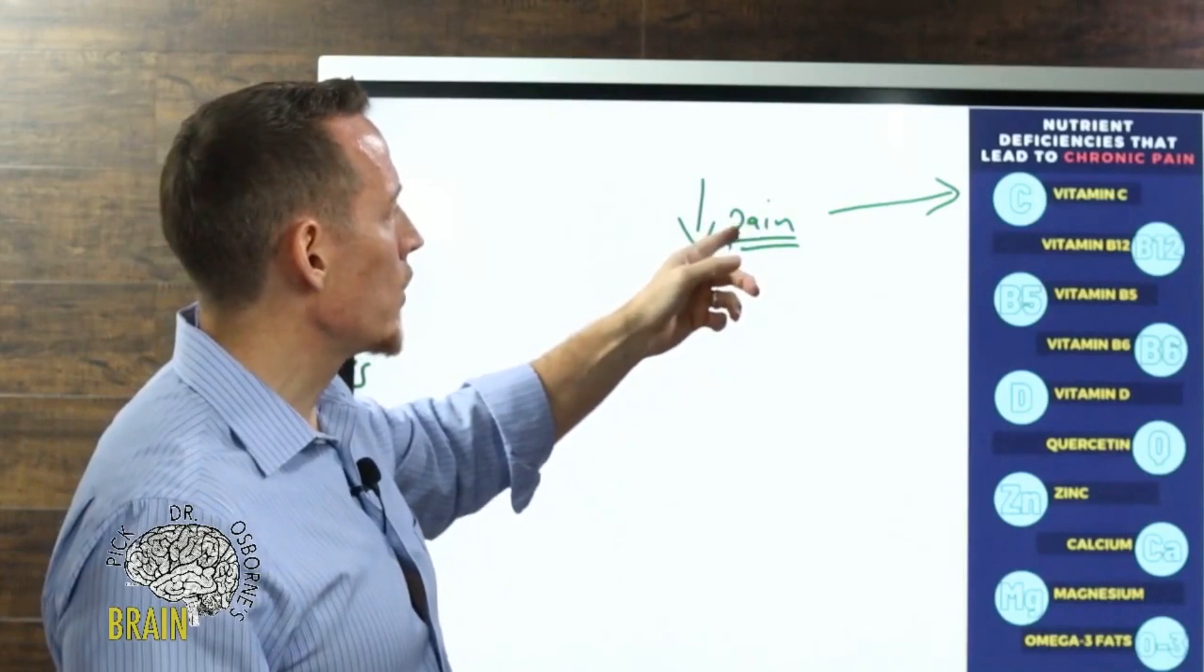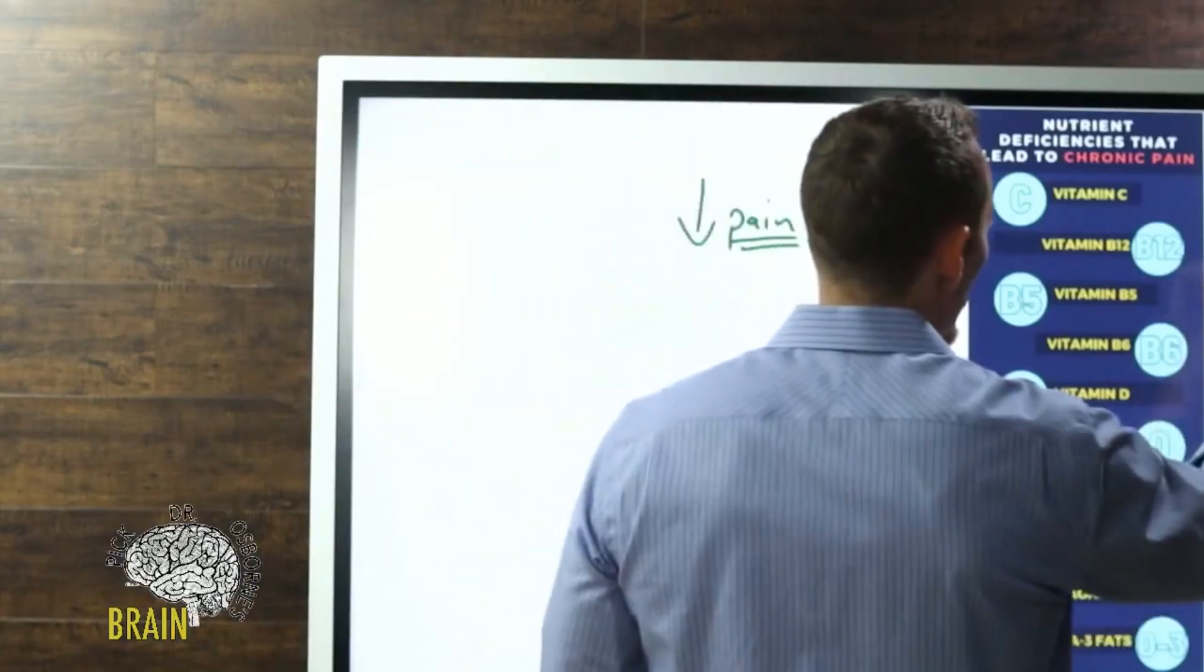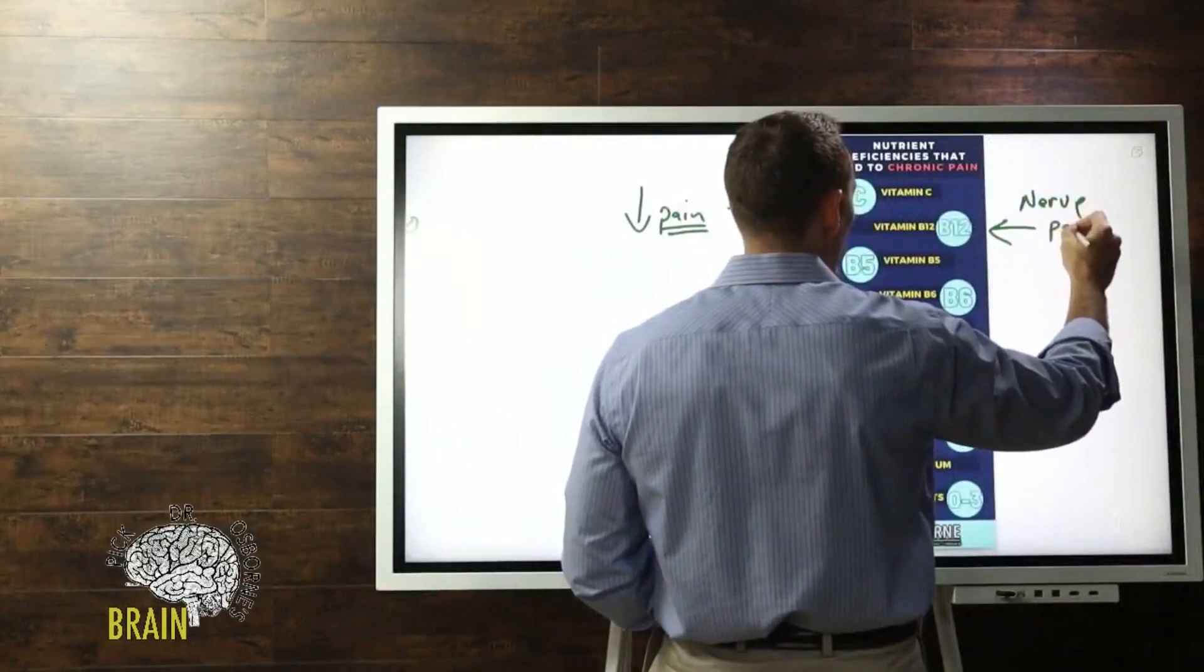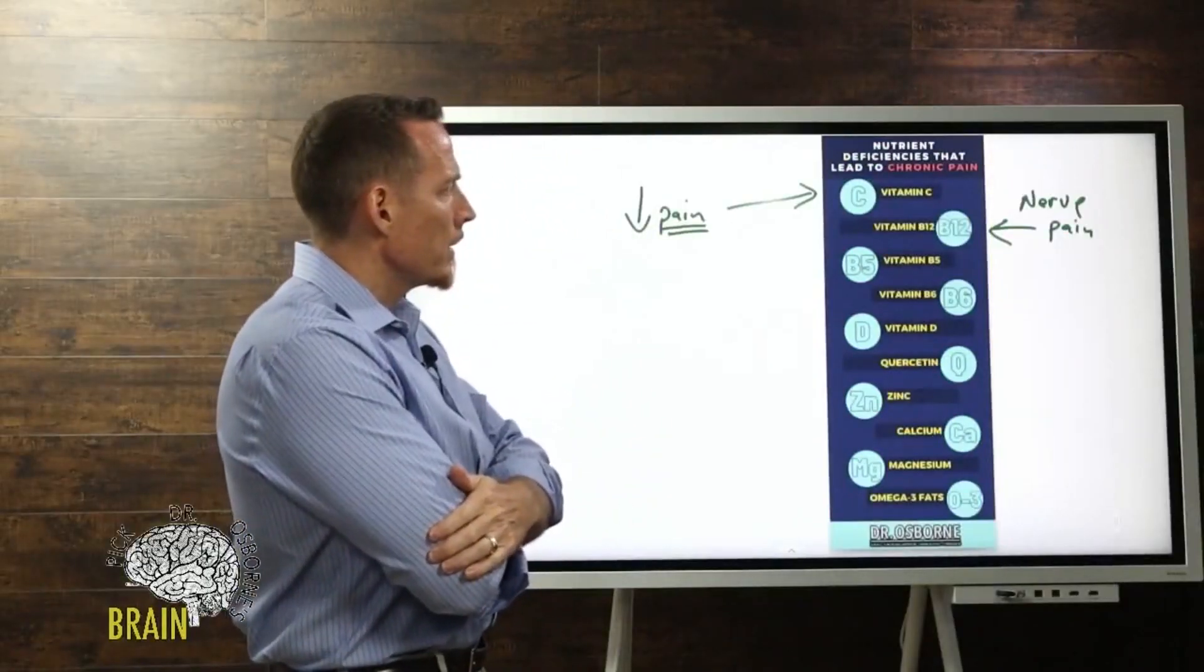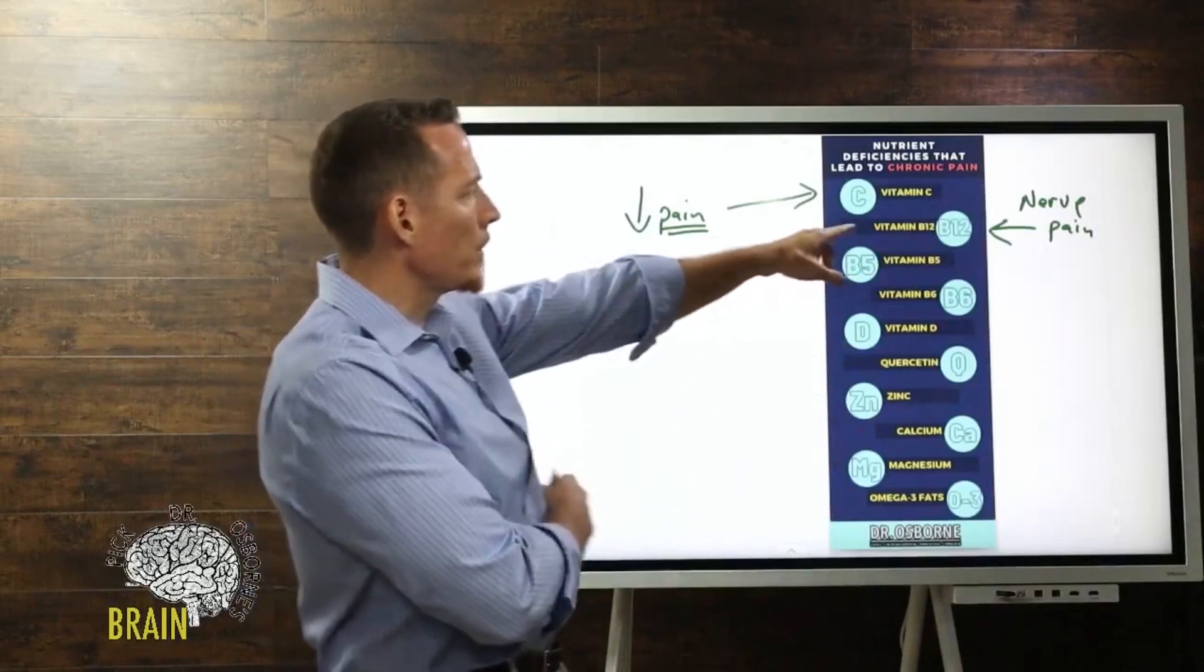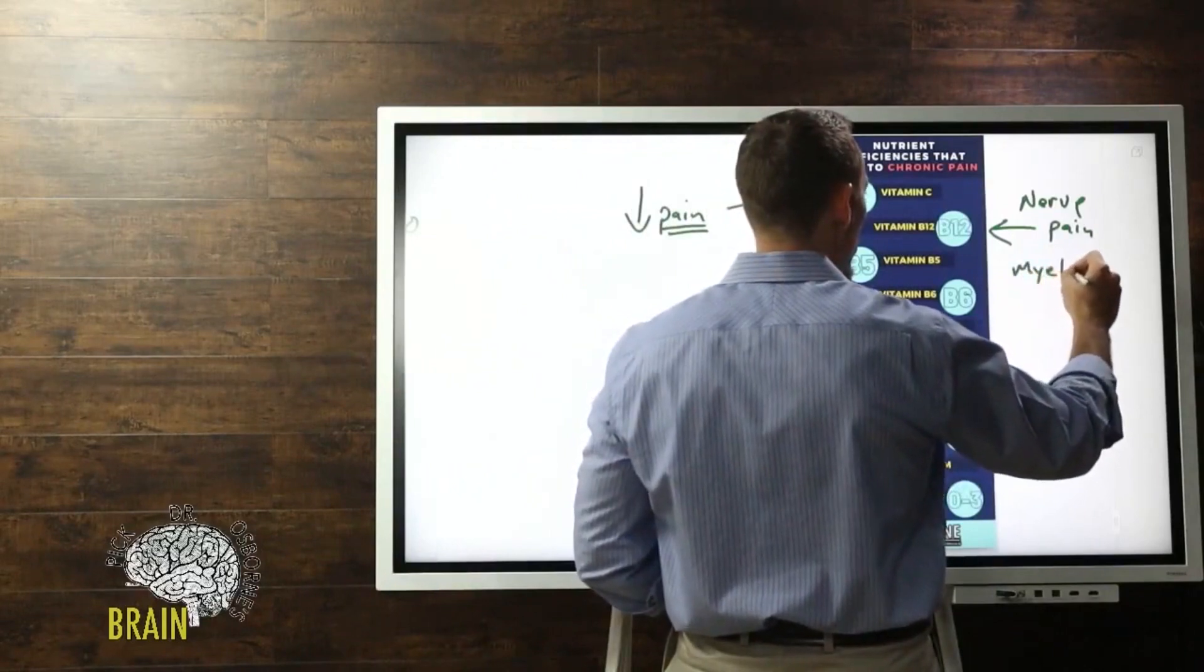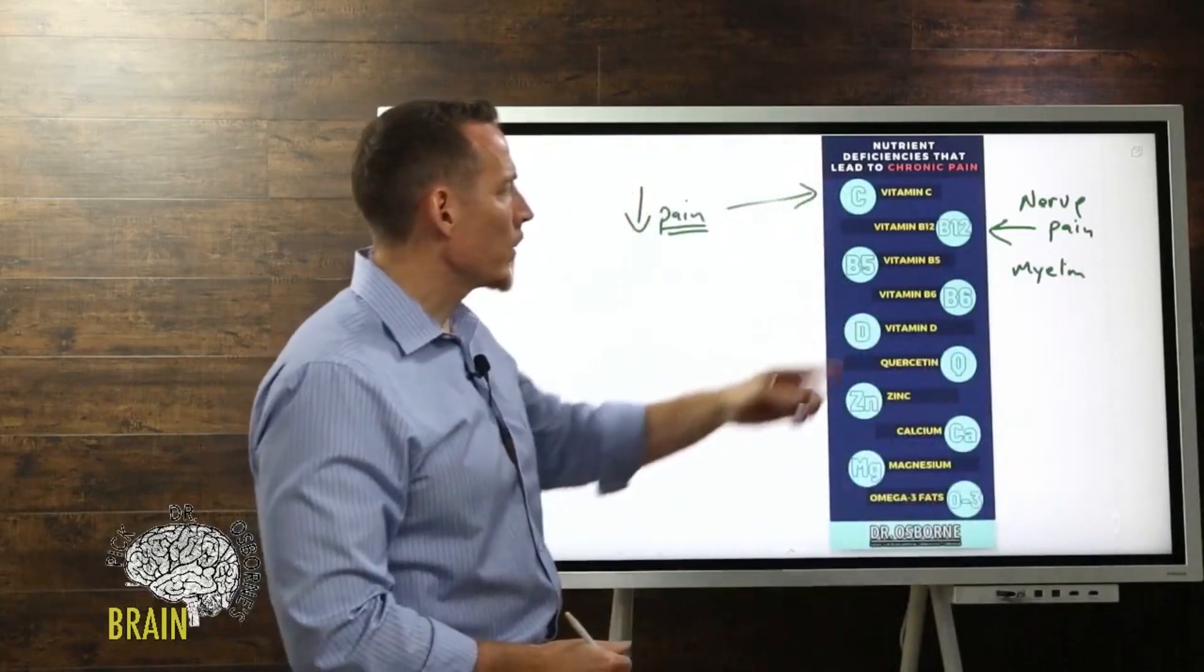Vitamin B12 is where I see it play a major role in people with nerve pain. Individuals with diseases like multiple sclerosis or transverse myelitis have diseases where the myelin sheath around the nerve is starting to deteriorate. You need vitamin B12 to make the myelin, so without B12 you cannot produce the myelin sheath. Sometimes the pain is a result of not having adequate myelin, so B12 is very important.